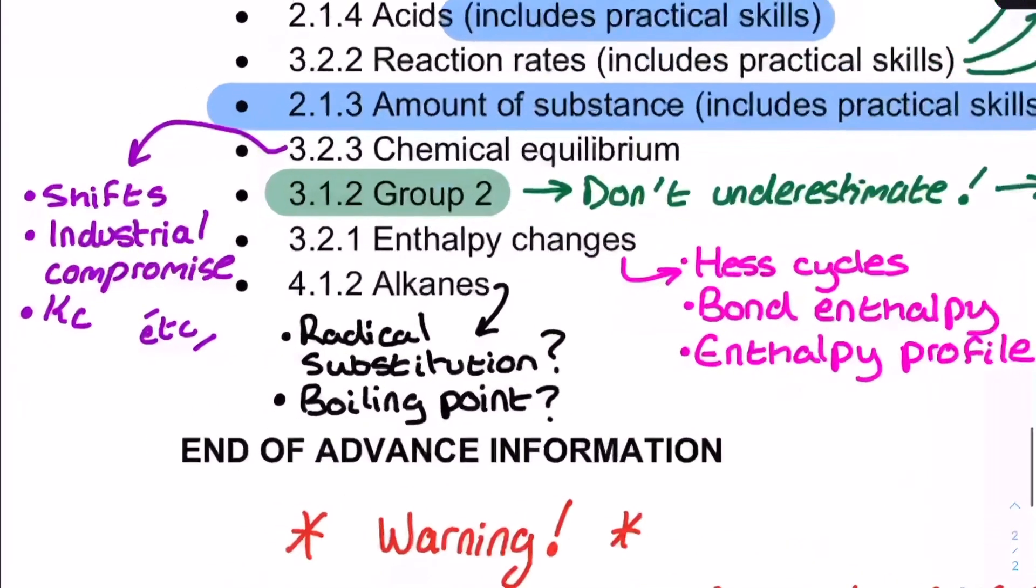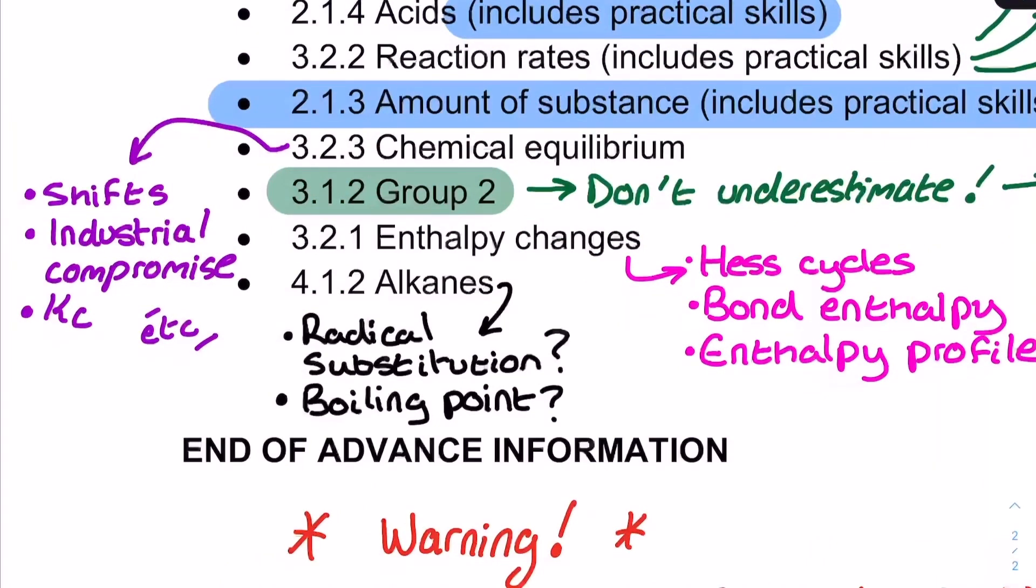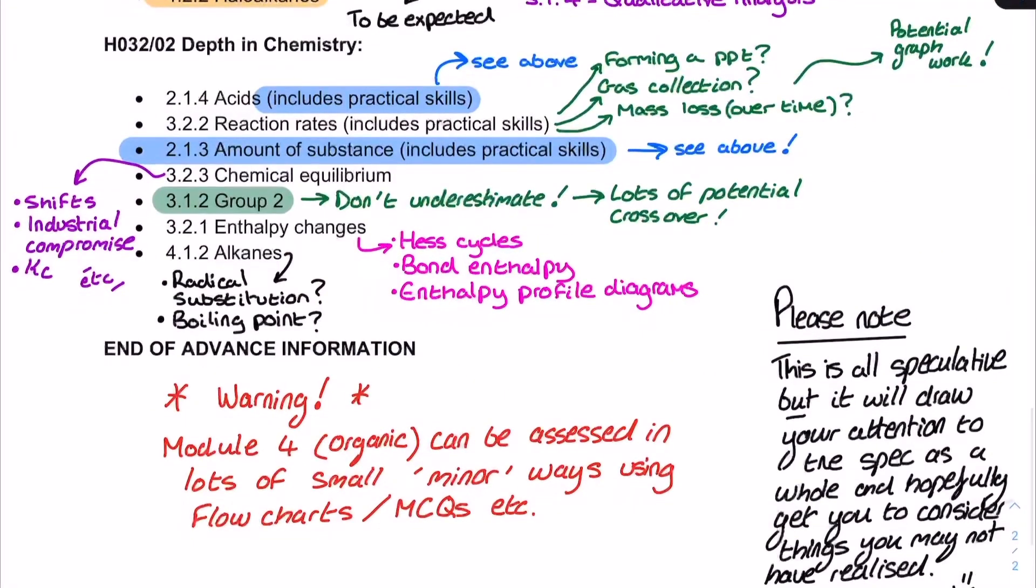Chemical equilibrium, a bit further down the list, isn't too surprising. You've got quite a lot in the equilibrium topic, even though it's quite short. You've got shifts, industrial compromise, and KC. So, just expect a general, all-rounder question there for equilibrium. As long as you revise it in detail, you'll be all right. Group 2. Now, Group 2. Don't underestimate it. Much like periodicity and the halogens and qualitative analysis from Module 3, do not underestimate Group 2. There's a lot of potential crossover with things like electron configuration and atomic structure here. So, please be careful with Group 2.